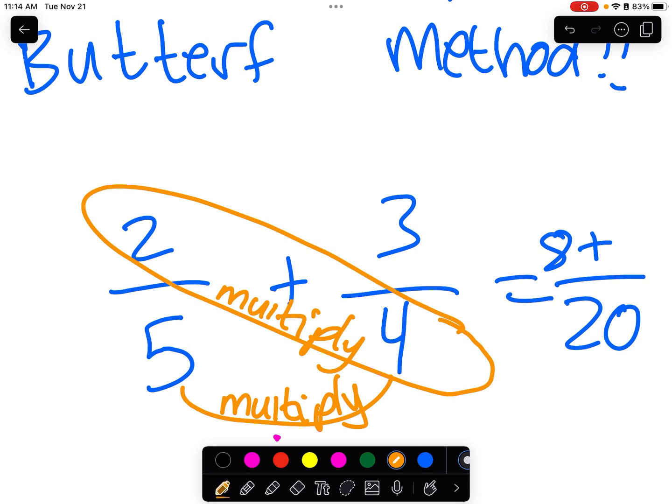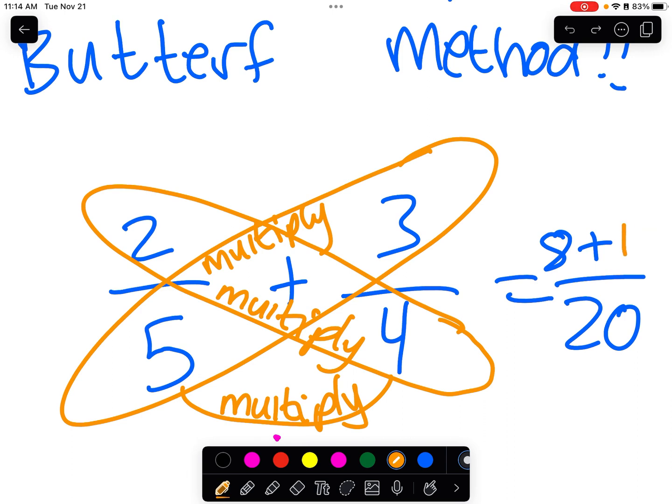We're going to add that to the product of, in this case, 3 times 5. That's the numerator of the other fraction and the denominator. We multiply that. 3 times 5. That's, oopsies, wrong color.